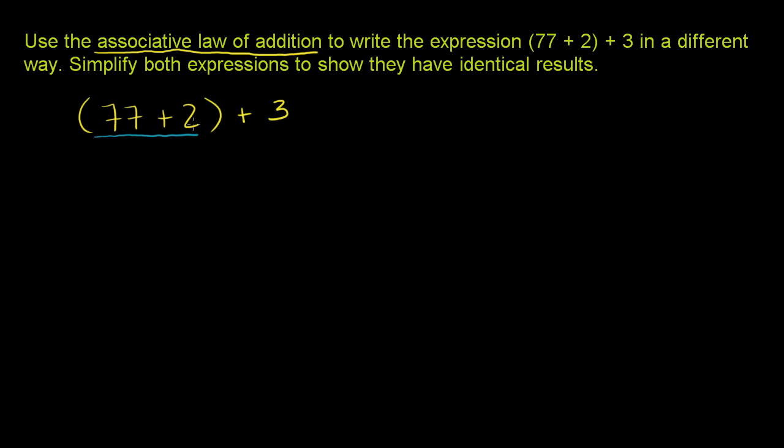So you'd say 77 plus 2, that's 79. So everything in the parentheses just evaluates to 79, and then you still have that plus 3. And 79 plus 3 is 82. So this is equal to 82. That's if you just evaluated the way that they gave it to us.